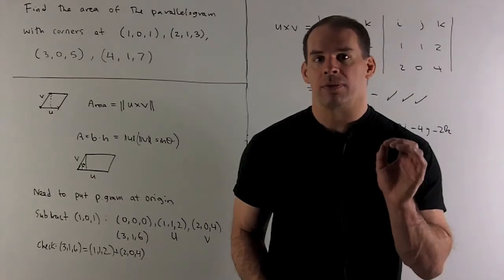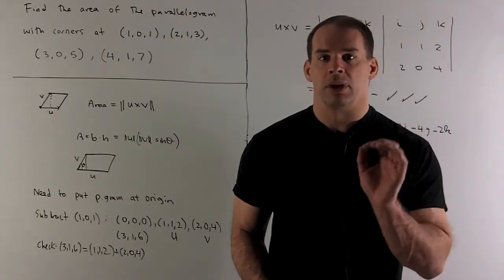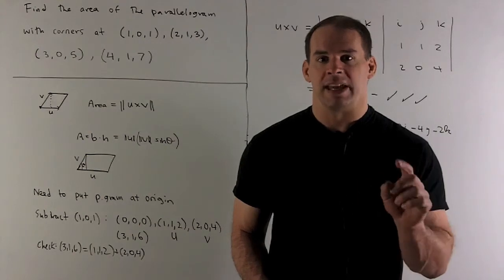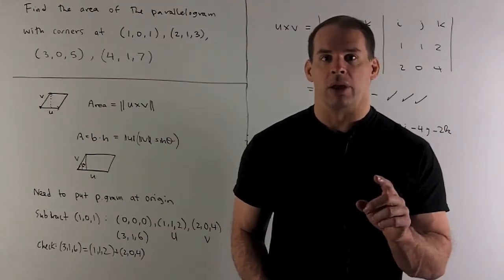Then, the rule for the area is: take the cross product of your u and your v, then take its length. That's going to be the area of the parallelogram.